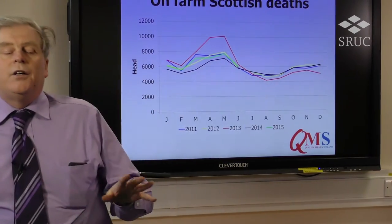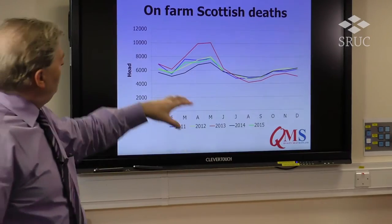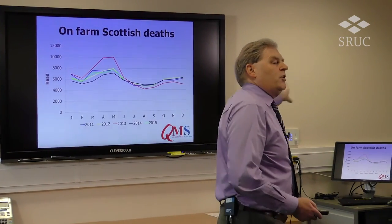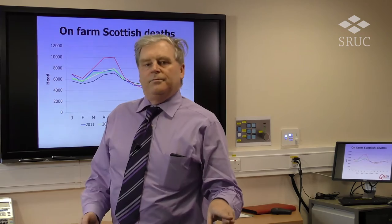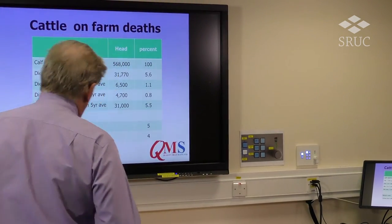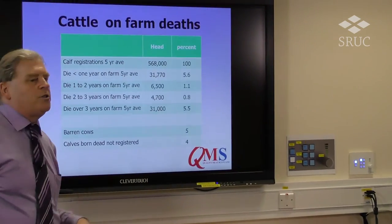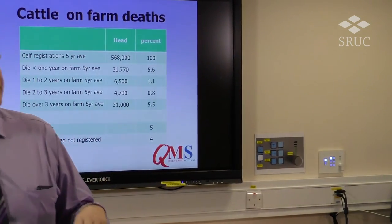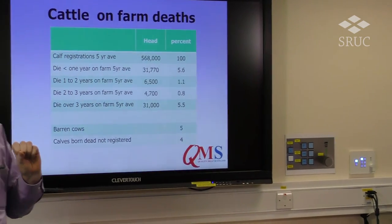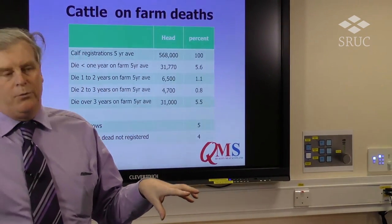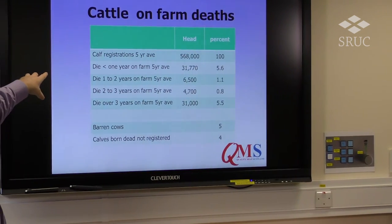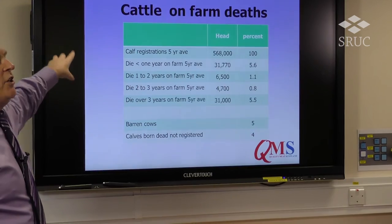That sets me to think about efficiency, because what this is telling me is that an animal has been born that has the capability of delivering revenue for me — and it won't do that if it's dead. On average over the past five years, 568,000 calves have been registered each year in Scotland — that's 100 percent. Nearly 32,000 die before they are a year old. That's five and a half percent of all calves born each year dying before they're a year old — and I won't bore you with the ones that don't even get registered.